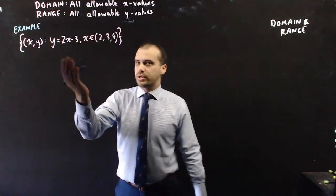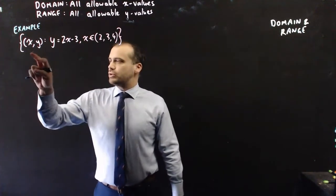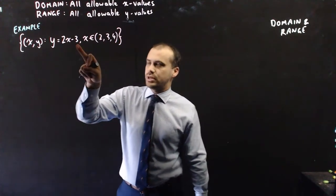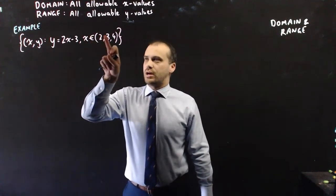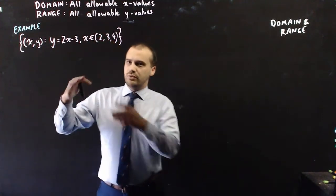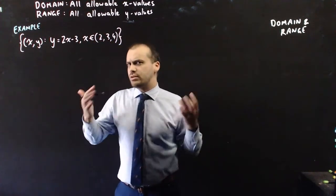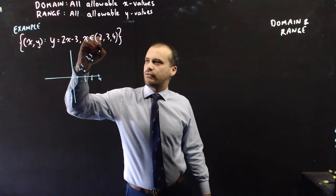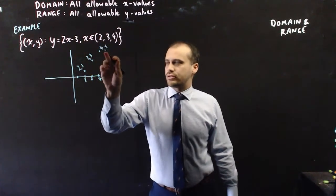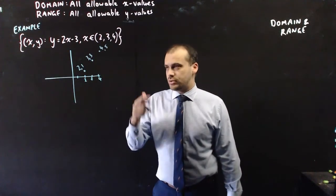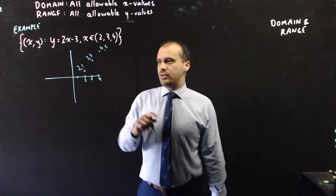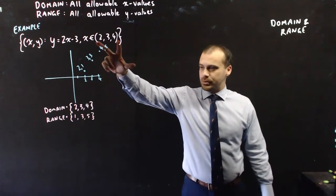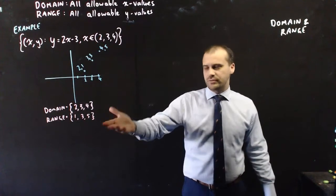Here's an example of an explicit domain. We're being told there is a relation between x and y, and that relation is the equation y equals 2x minus 3, but only where x is in the set of the numbers 2, 3, and 4. If we were to sketch this, we wouldn't get a line — we'd just get three points: (2, 1), (3, 3), and (4, 5). That means the domain is just 2, 3, 4 and the range is just 1, 3, 5. In the previous examples they were all implied; in this one we're told what the domain is, and we find the range from that.